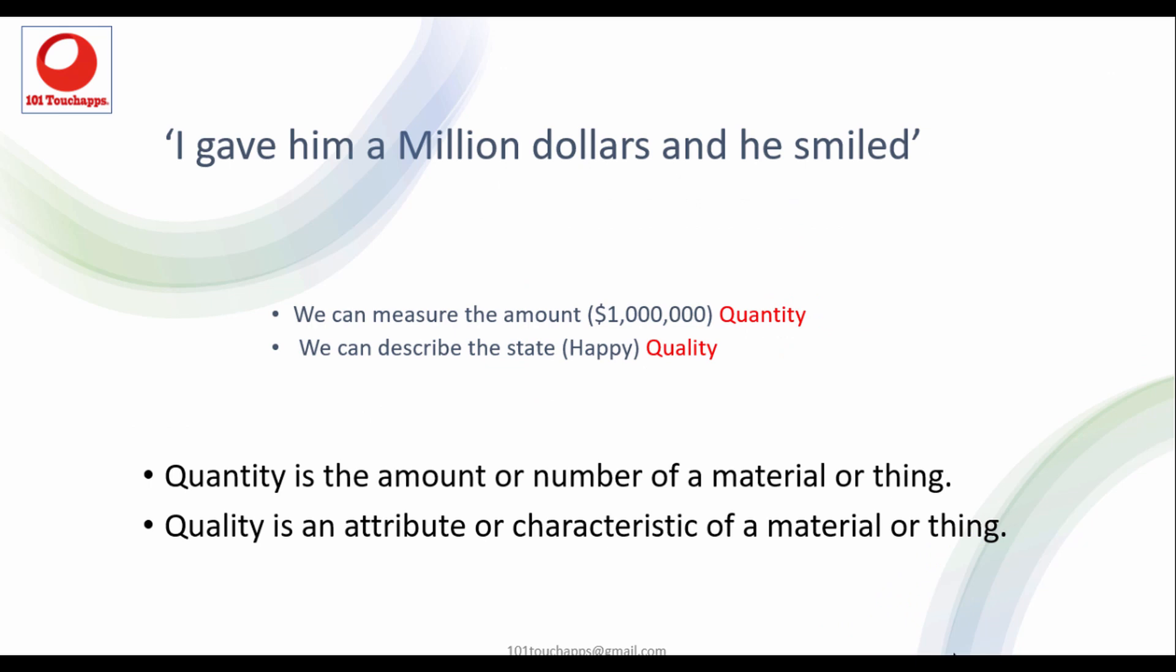I always like to use this example for my students. I tell them, if you look at this statement, I gave him a million dollars and he smiled. Like I gave him a million dollars. We can measure that amount of money. So we have a million dollars and we can count this. We can measure it. But we can't really measure his state. We can just say that he's happy. So we're describing that state. So that's quantity and that's quality. Quantity is measurable. It is statistical. It's countable. While the quality, that state can be not measured, but it can be described.